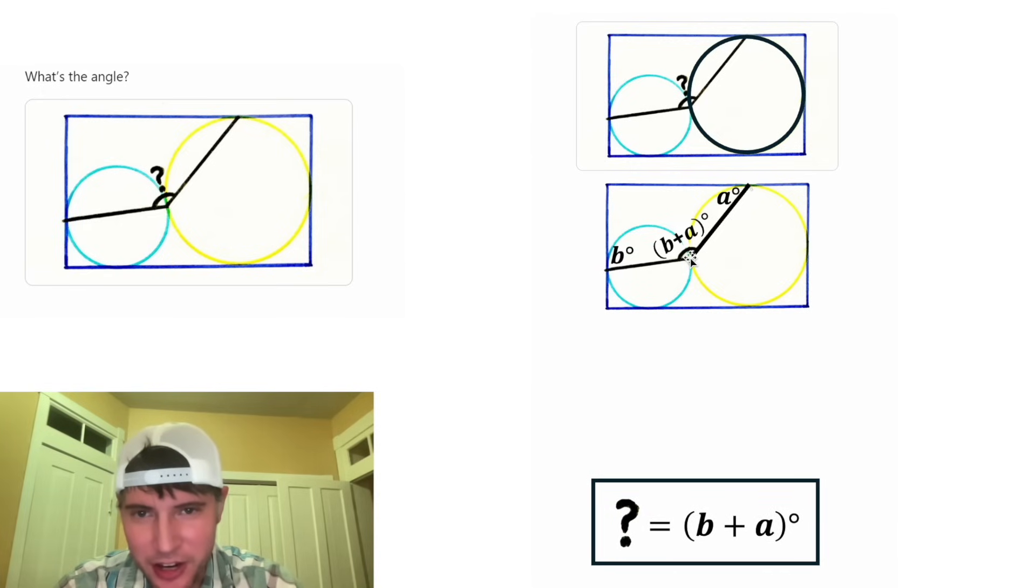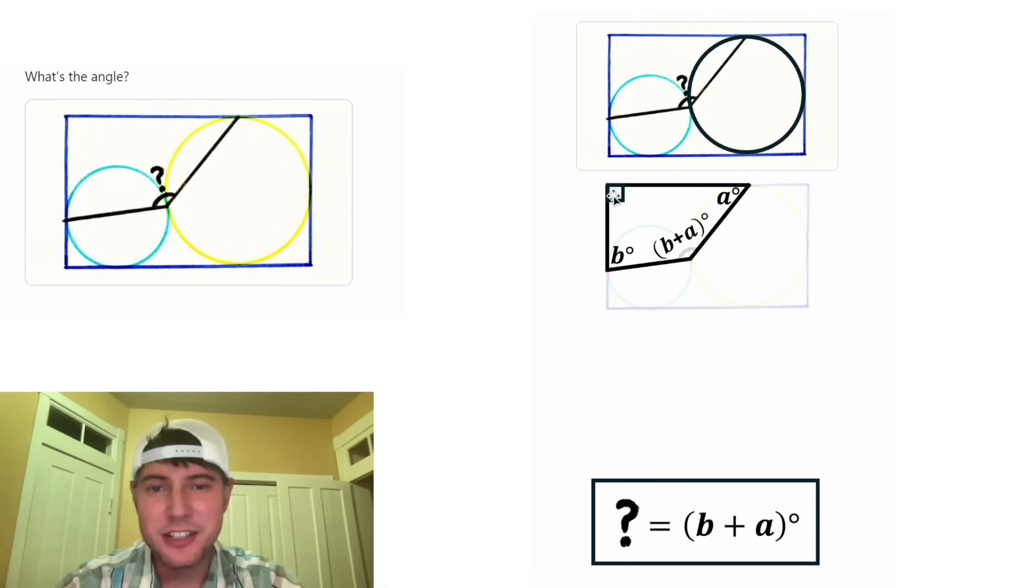Next, let's focus on this quadrilateral right here. This angle will be a right angle because of the rectangle. And let's focus on our new quadrilateral. The sum of the interior angles of any quadrilateral is 360 degrees. So we can say 90 plus A plus A plus B plus B equals 360.